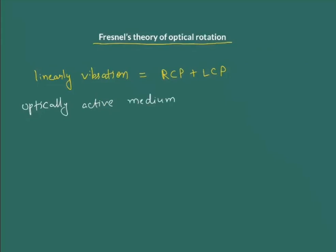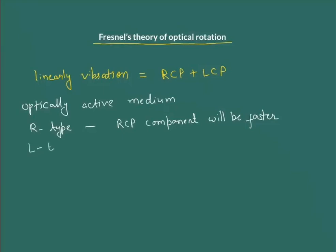We can divide optically active materials into two categories. If the material is R-type, then the RCP component will be faster. If it is L-type, then the LCP component will be faster than the other one.